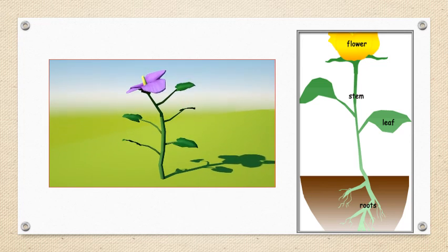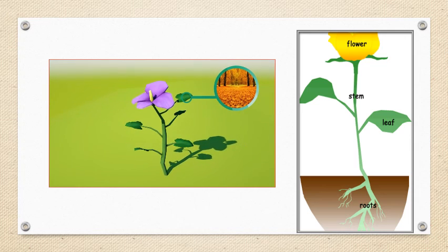In autumn, light is scarce. Chlorophyll levels drop down and leaves turn yellow or brown.